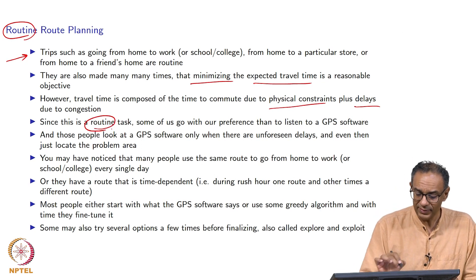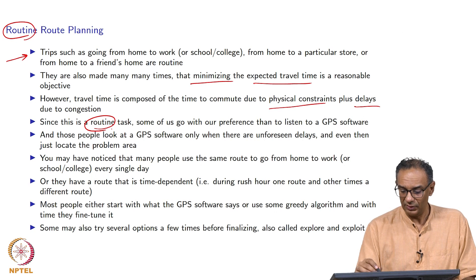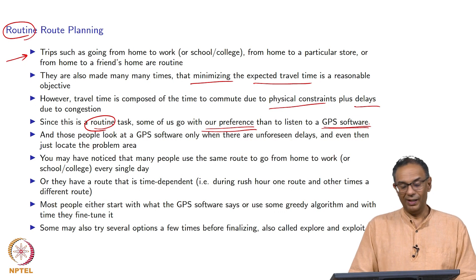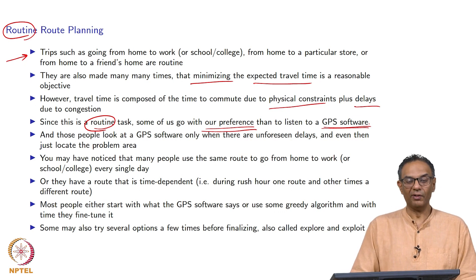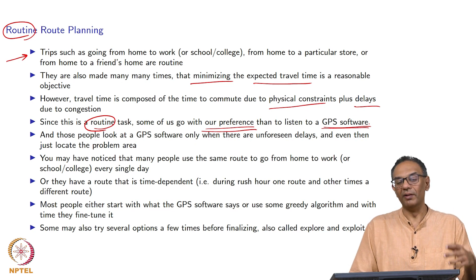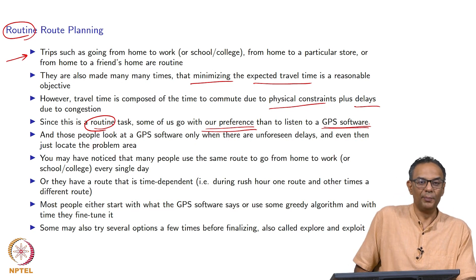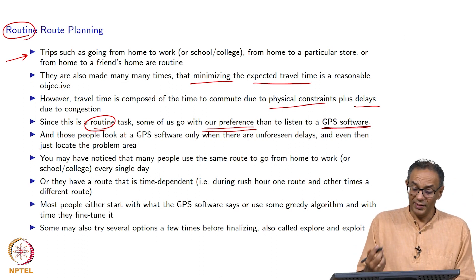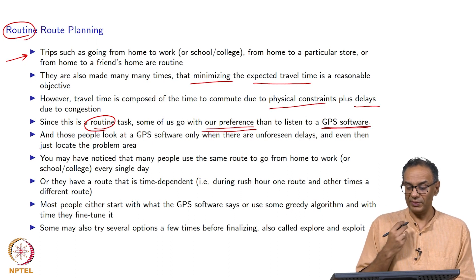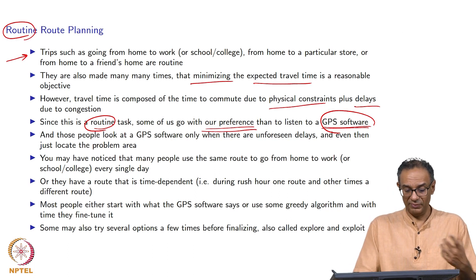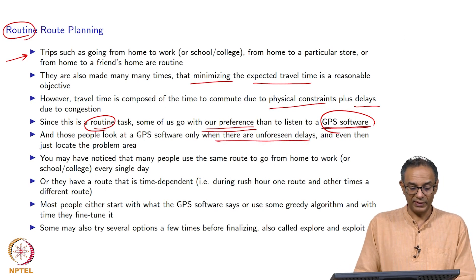Because this is a routine task, many of us go with our own preferences rather than listen to GPS software. For sure, I never look at my GPS when going from home to work and back, unless there is some unforeseen delay. Suddenly there is traffic congestion — I pull up Google Maps, see there is congestion, and go through another route. Other than that, we almost always use our own preferences and typically do not use GPS software. We do use GPS sometimes, such as when there are unforeseen delays.